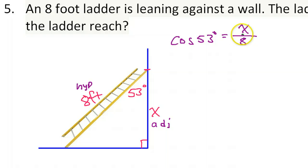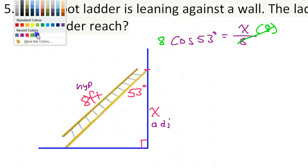This time the variable is in the numerator. So it won't help us to switch the denominator with the quantity out here. Instead, we will just multiply by the denominator. Multiply by eight on both sides. So these cancel out. And I can just put eight cosine 53 into my calculator.